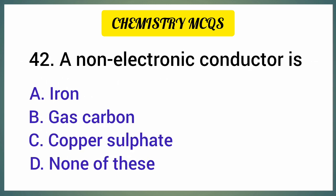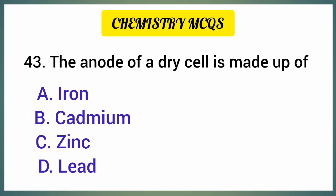A non-electronic conductor is — correct option is option D: None of these. The anode of a dry cell is made up of — correct option is option C: Zinc.